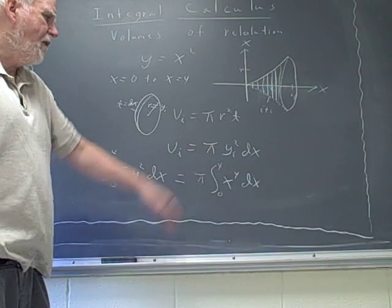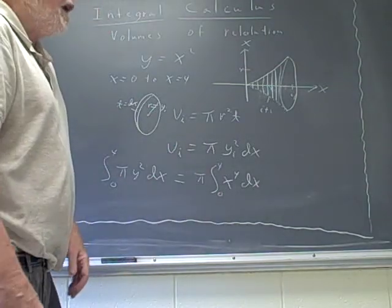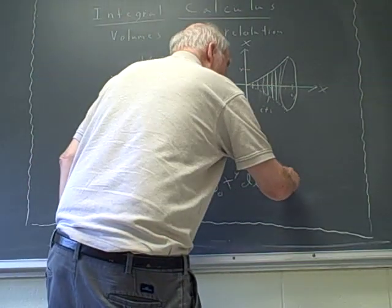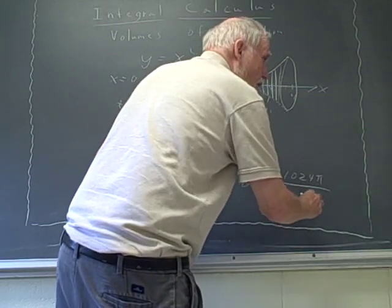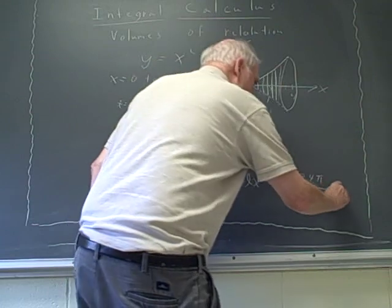It goes to x to the fifth over five, evaluated from zero to four. And you end up with 1,024 pi over five cubic units,